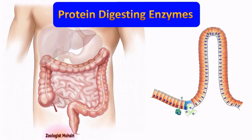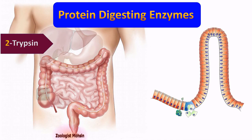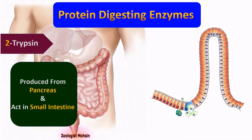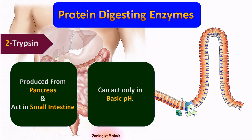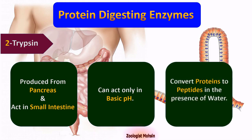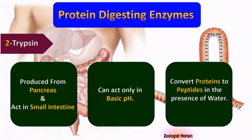Number two: trypsin. Trypsin is produced from the pancreas and acts in the small intestine. Trypsin can act only in basic pH, that is more than 7. Trypsin converts proteins to peptides, just like pepsin, in the presence of water, but acts in the small intestine.